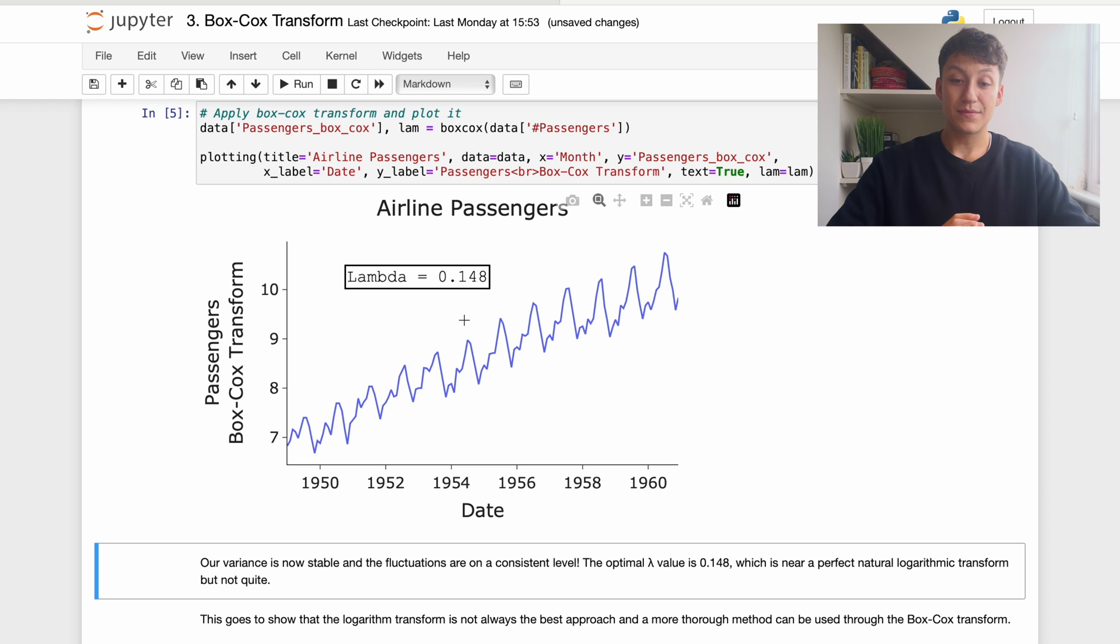So this basically—you can use a natural log a lot; it works for most cases—but what we see here is that the best transform is actually not necessarily a purely logarithm transform. It's close to it but not exactly right. Therefore, if you want to be more accurate when you're preparing your data for forecasting, the Box-Cox transform is much better than just assuming a logarithm transform.